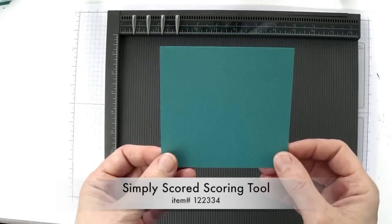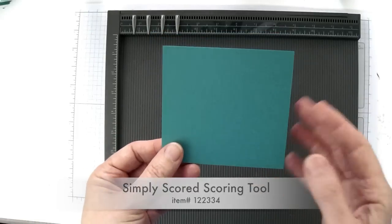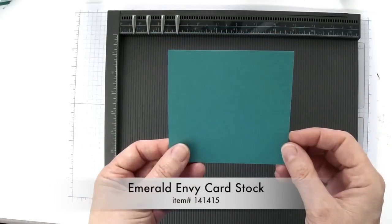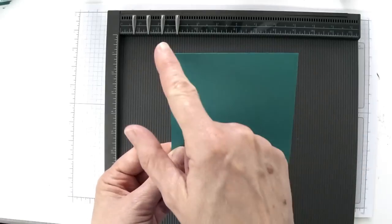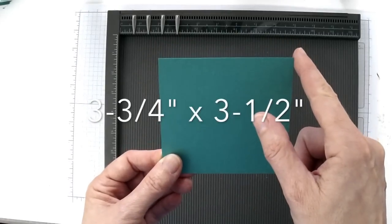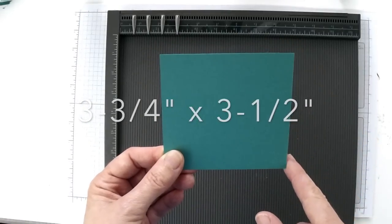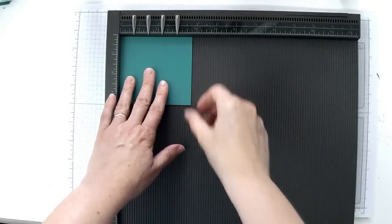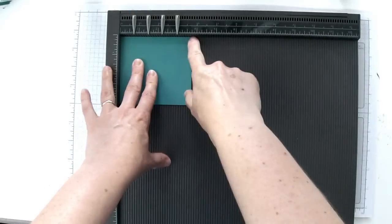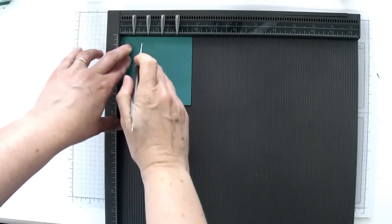To make the box you're going to need a piece of cardstock. I've cut a matching one in Emerald Envy cardstock here and I've cut this piece to three and three-quarter inches by three and a half inches.